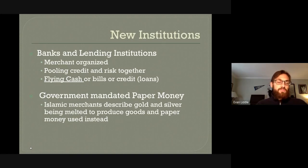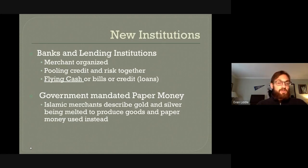Merchants also began to pool their credit and risk together. For example, ten merchants might go in on a ship to get a shipment of goods from another place and then split the profits together. We also begin to see something called flying cash, which is essentially a loan. People could get a loan to undertake a trade expedition or start up an iron factory, making it easier to pursue economic objectives.